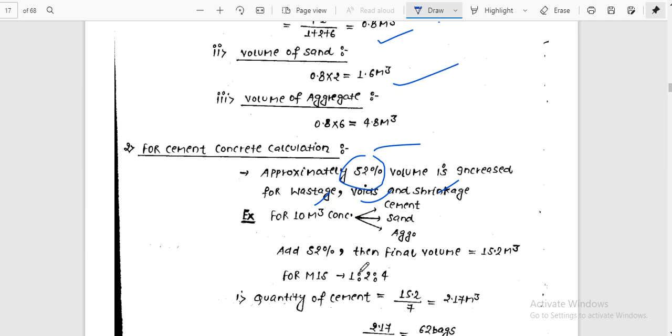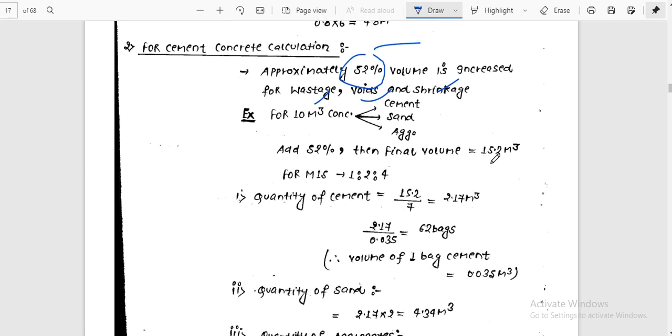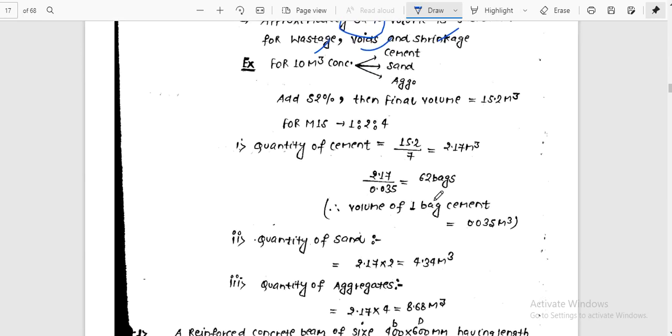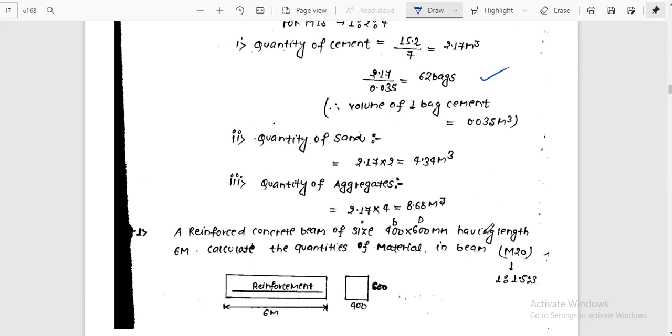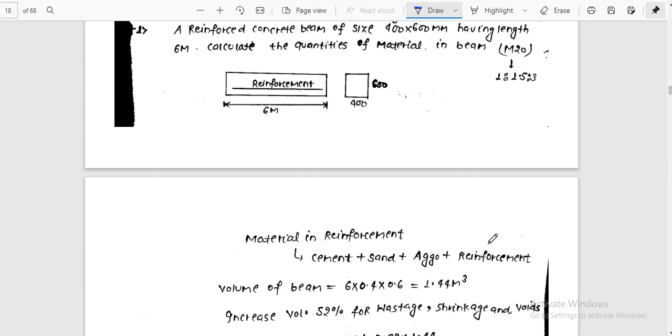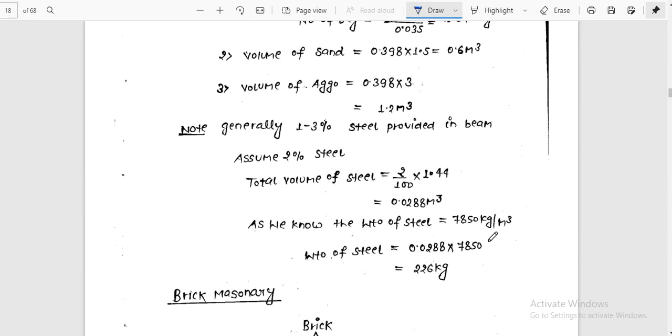For 10 meter cube concrete, suppose concrete is 1 to 2 to 4, cement to sand to aggregate. Add 52%, then final volume will be 15.2. Quantity of cement we can calculate as 2.17 meter cube. And bag of cement is 0.035 meter cube, so we get 62 bags. Quantity of sand is 4.34 meter cube, quantity of aggregate is 8.68 meter cube.